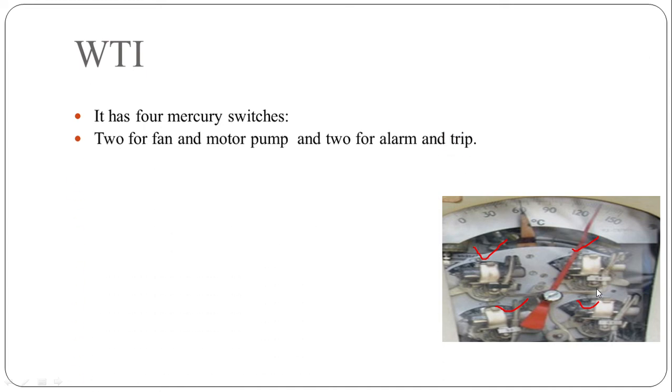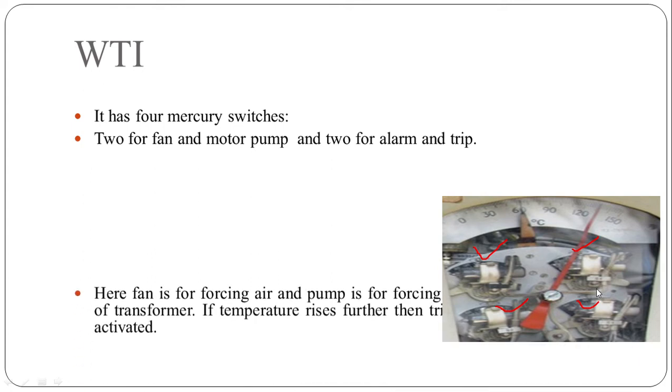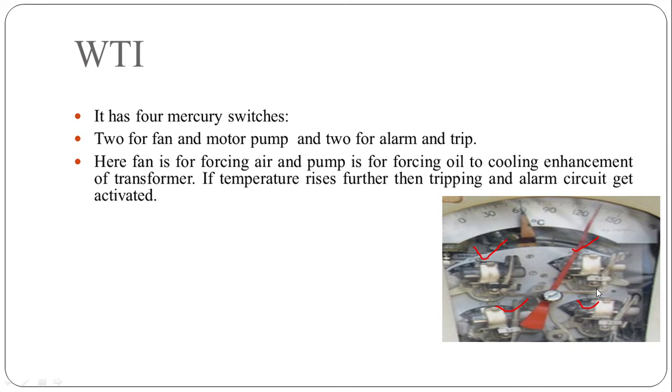Two mercury switches are for fan and motor pump and remaining two are for alarm and trip circuit. Here fan is used for forcing air and pump is used for forcing oil. These fans and pumps are used to enhance the cooling of transformer. If temperature rises further then tripping and alarm circuit get activated. The operation of these switches can be understood by using an example.